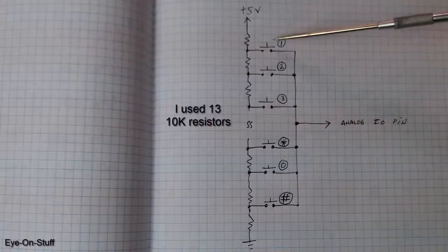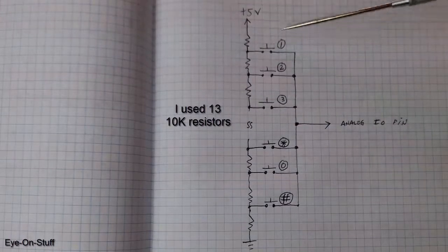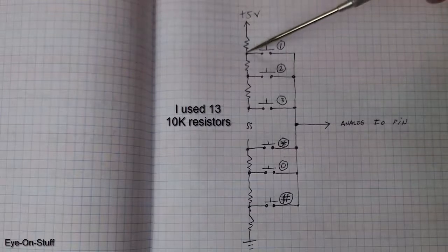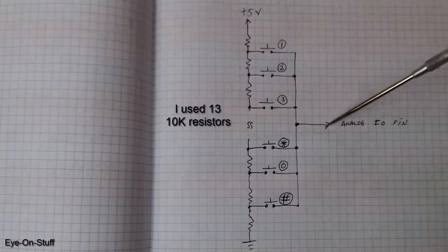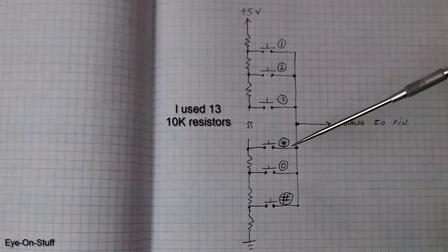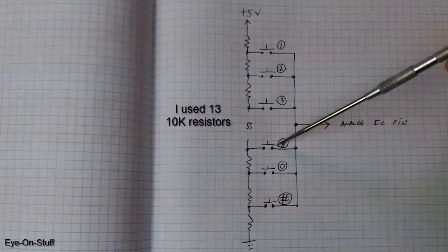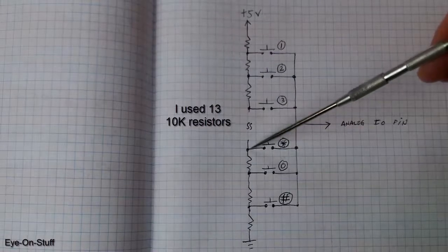So if you were to press the number one button it will send the voltage at this point of the voltage divider to the analog I/O pin. If you were to press the star button here it would send the voltage at this point of the voltage divider to the analog I/O pin.